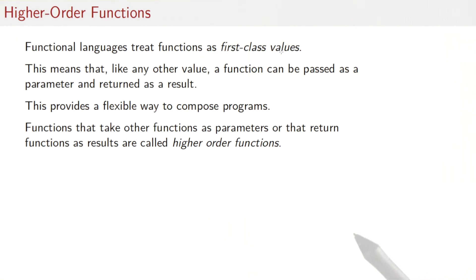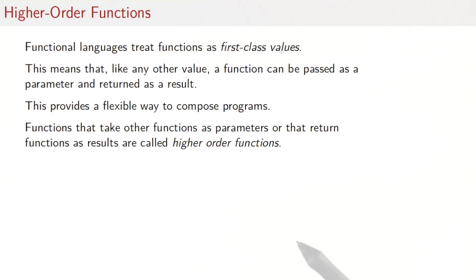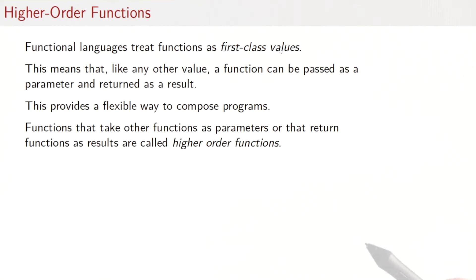Functions that take other functions as parameters or that return functions as results are called higher order functions. That's the opposite of first order functions. A first order function is a function that acts on simple data types such as ints or longs or lists, but not other functions, whereas a higher order function acts on other functions.